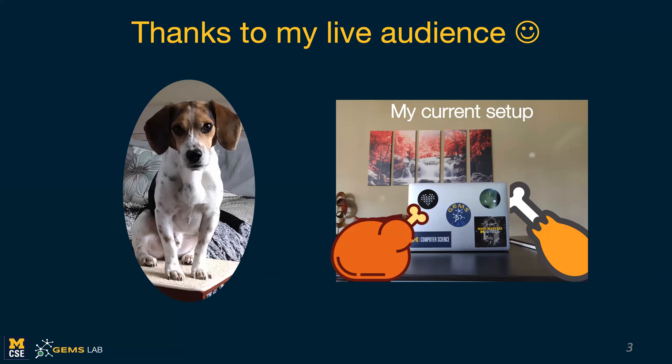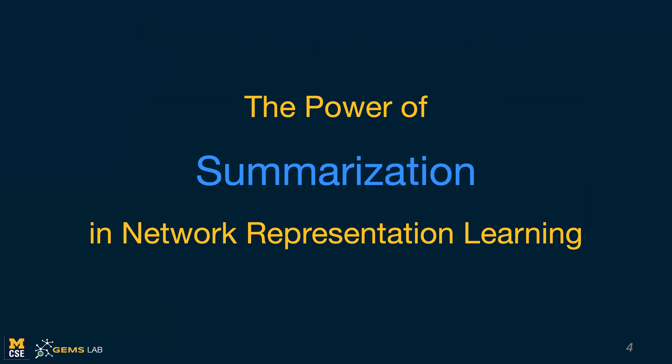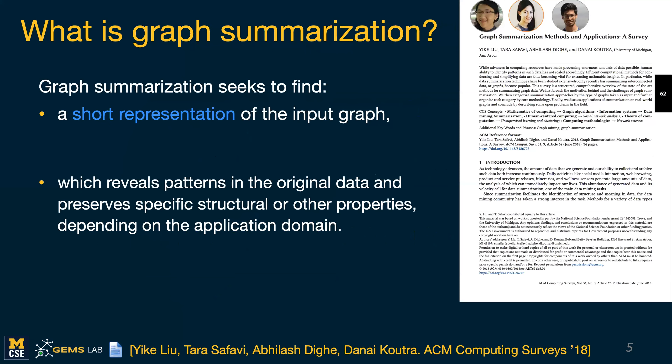So I'll be talking about the power of summarization in network representation learning. Before I get to that, I want to make sure that we're all on the same page with respect to what summarization is. I'll define it in terms of its goal, which is to find the short representation of the input graph, which reveals some patterns or some specific structure or maintains some structural or other properties of the original graph.